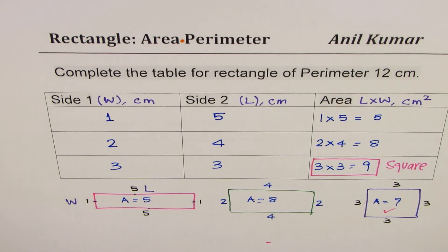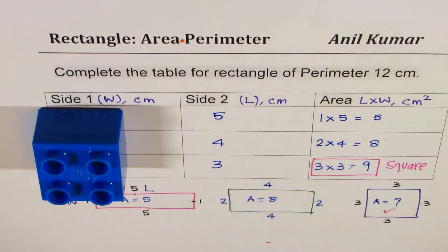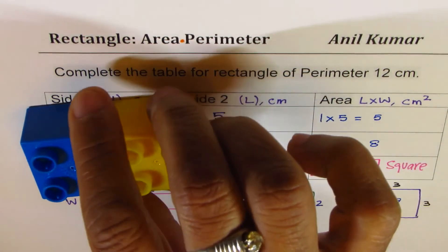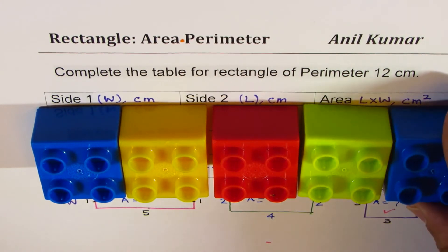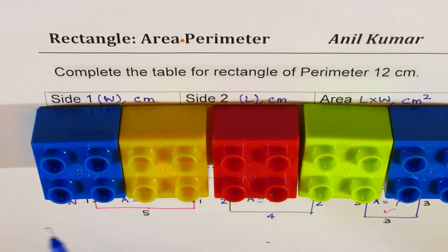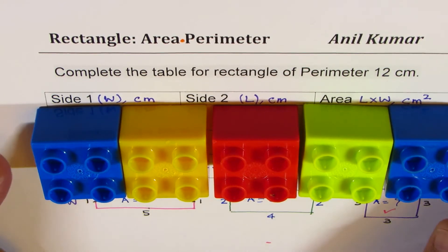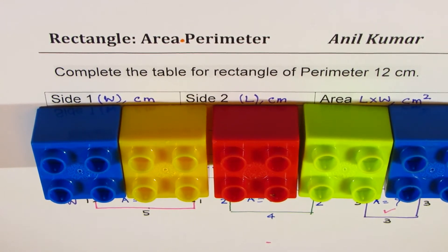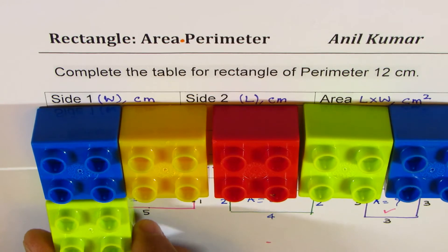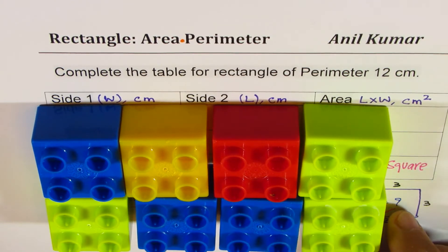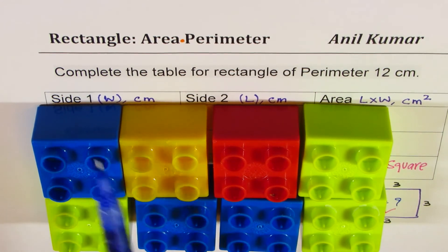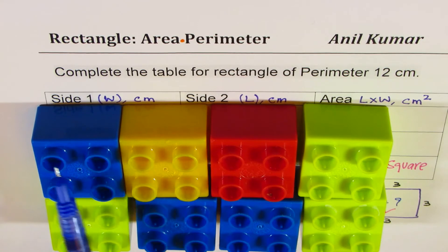Now using blocks, I can demonstrate this. Let me make a rectangle of size 1 by 5. You can count the perimeter: 1, 2, 3, 4, 5, 6, 7, 8, 9, 10, 11, 12 — perfect, that's our first case. The next one is 4 by 2, so we have 2 rows and 4 columns. Again the perimeter is 12, and half of 12 is 6.